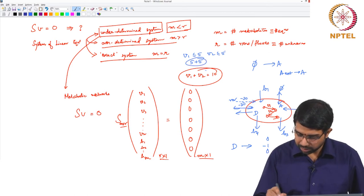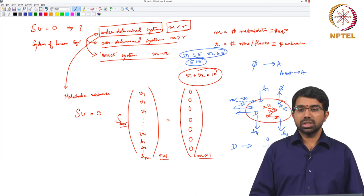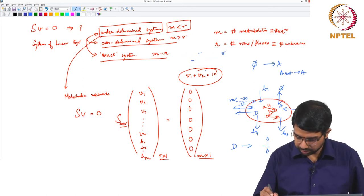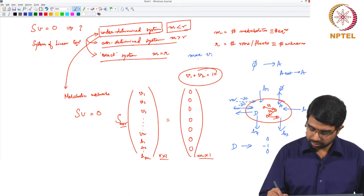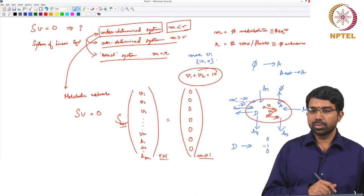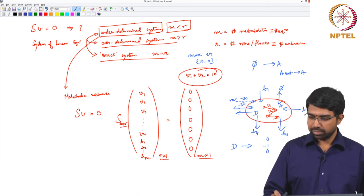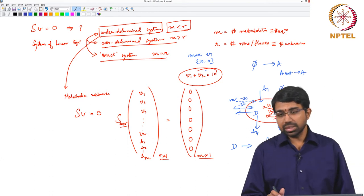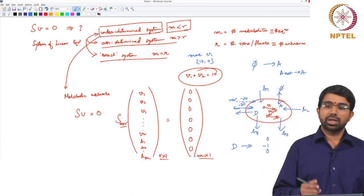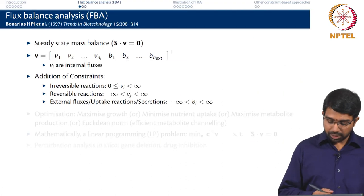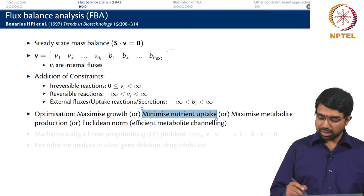So you need to give some other constraints or go in for some optimization. Usually we resort to maximizing something. Let us say solve this subject to max V1 and the answer is very simple, 10, 0. Solve this subject to max V2, 0, 10. So it is easy to find potentially a unique solution, not necessarily always, when you start specifying an optimization criterion.